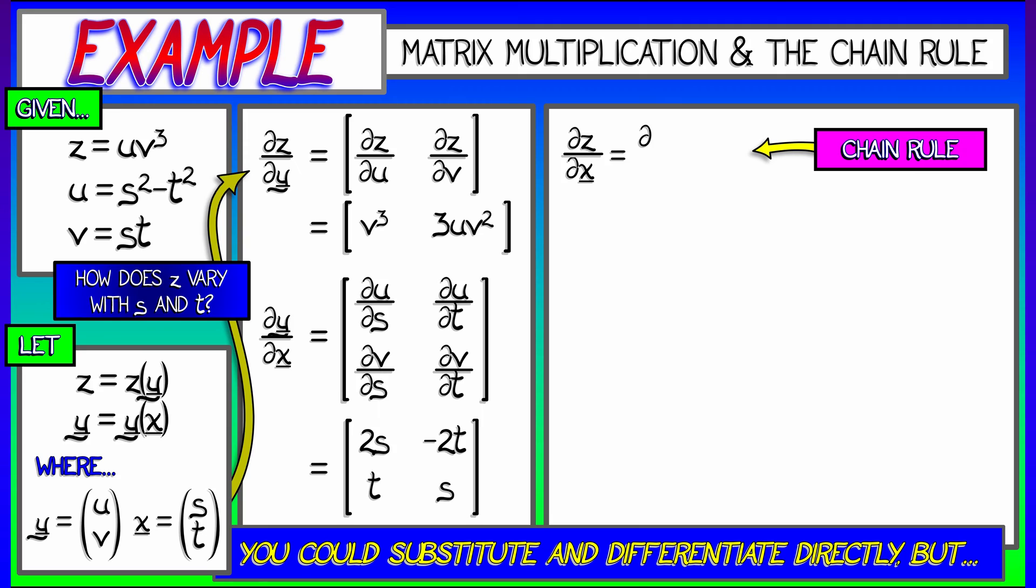Now we can put them together using the chain rule and matrix multiplication to get the derivative of z with respect to the x variables, that is s and t. So let me take those two matrices that we've computed, v cubed and 3u v squared, and then multiply that by 2s, negative 2t, t and s. Be careful about the order of multiplication.